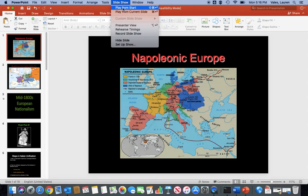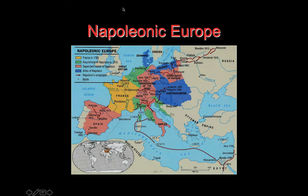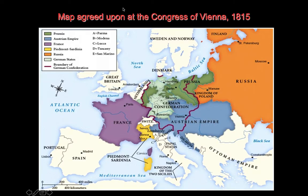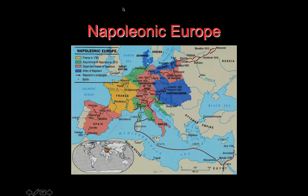Hello students. We are going to learn about Italian unification today. We're going to start by looking at the map of Europe under Napoleon. Napoleon expanded the boundaries of France, which is yellow or gold on this map, took over the green states, the pink states he ruled, and the blue states were actually allied with Napoleon.